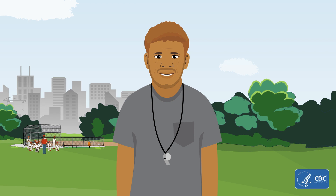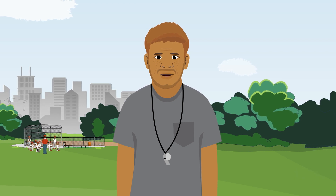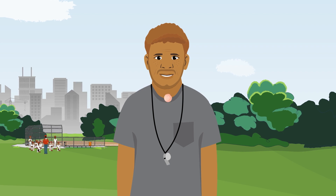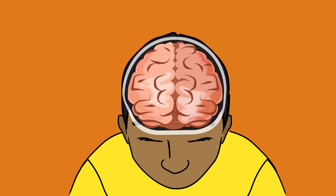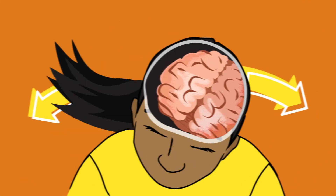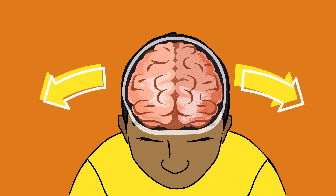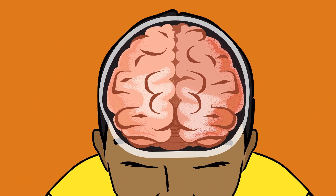A concussion is a type of traumatic brain injury caused by a bump, blow, or jolt to the head, or by a hit to the body that causes the head and brain to move quickly back and forth.